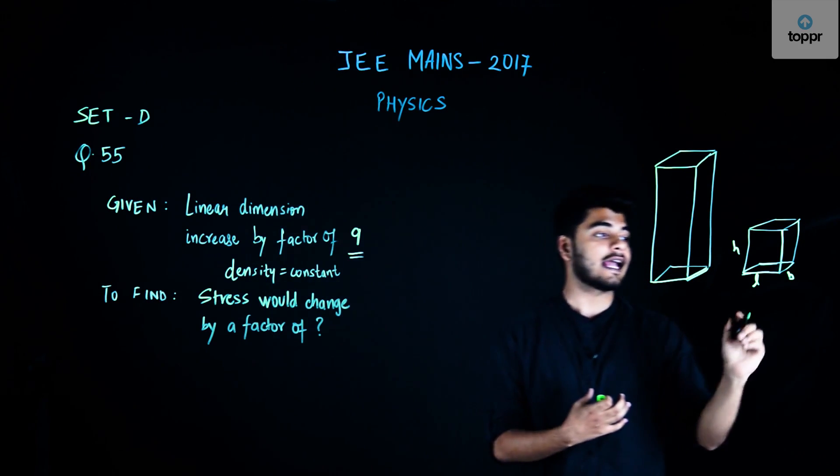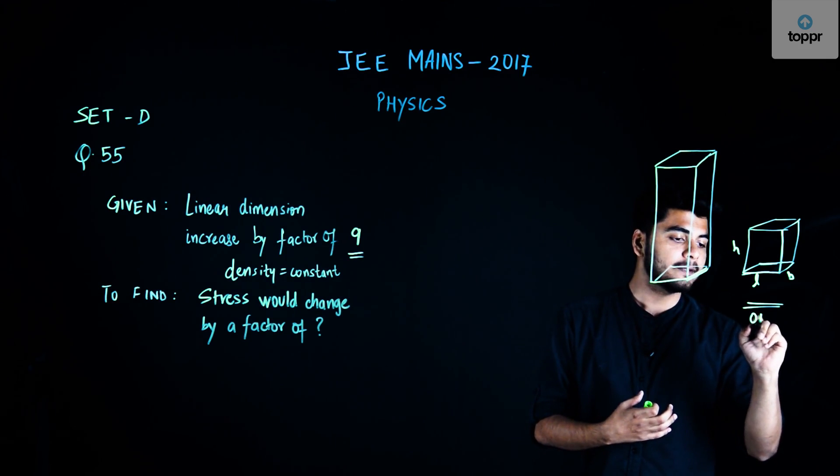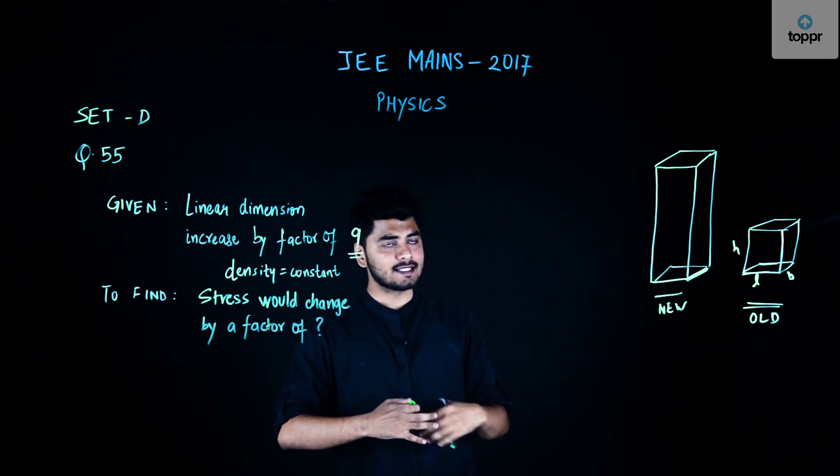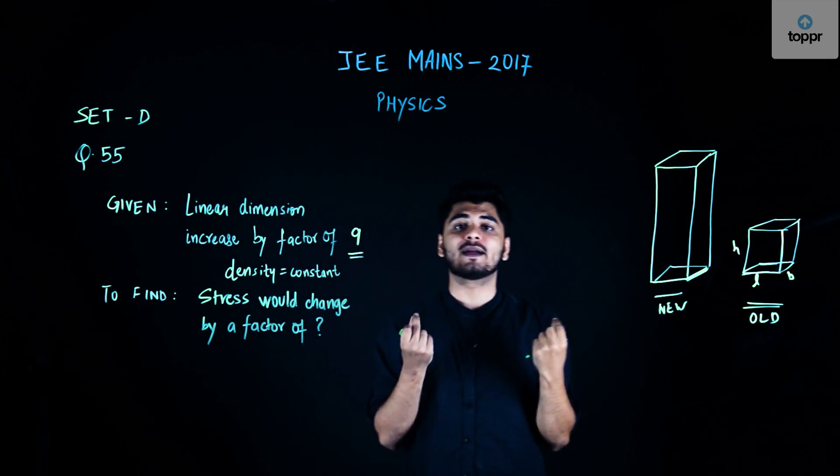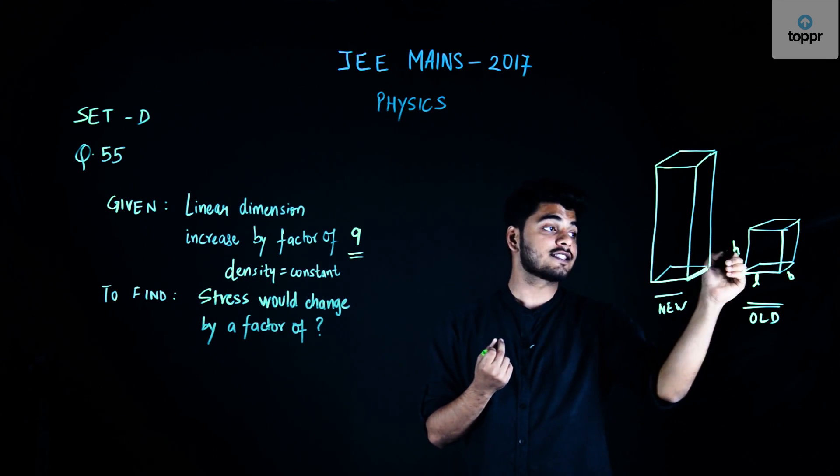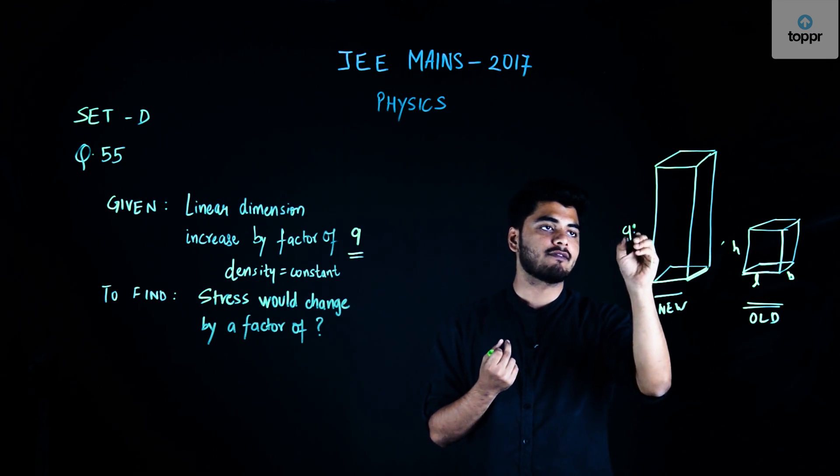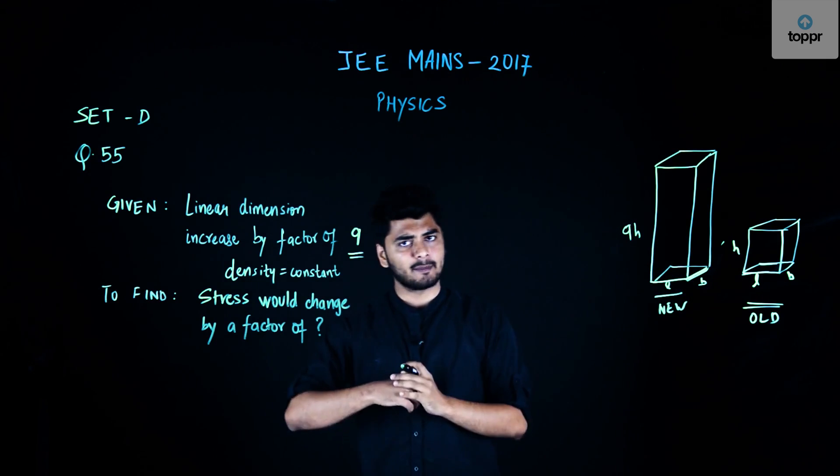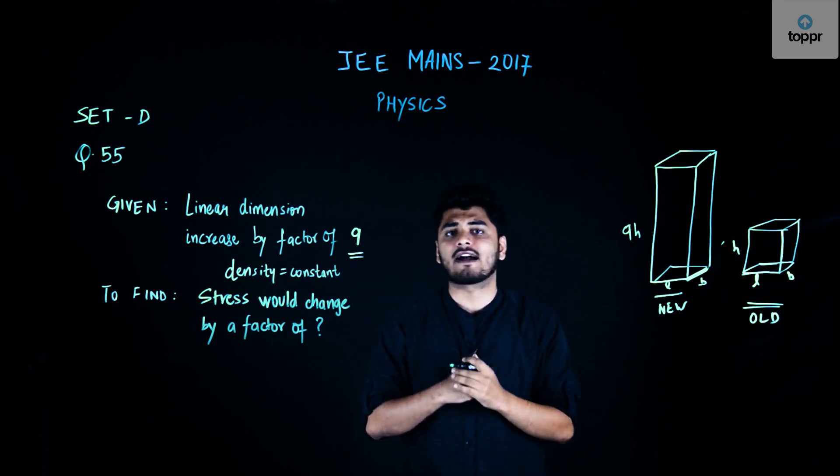Initially, this is old me and this is new me. Overnight, I grow into a giant. One of my linear dimensions, in this case height H, grows by a factor of 9. Other things remain constant. So my L and B remain constant, but my height suddenly increases by a factor of 9.